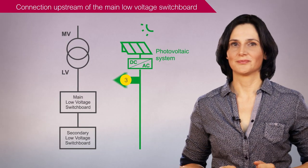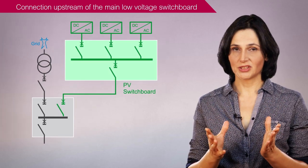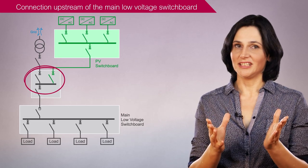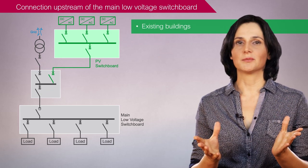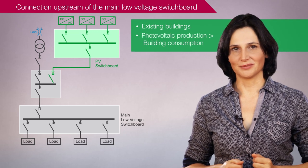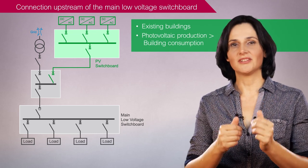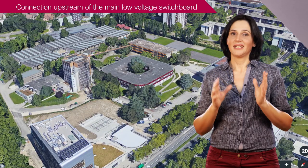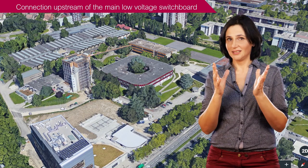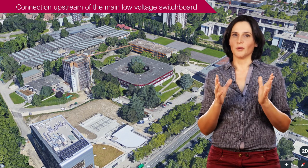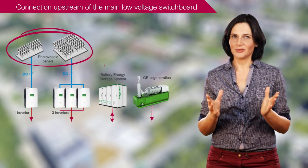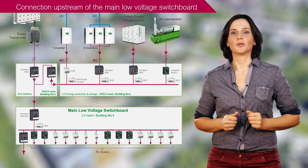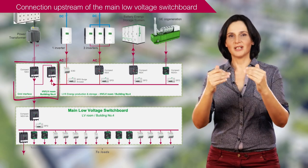Third architecture. In this third architecture, the photovoltaic production is connected upstream of the main low voltage switchboard. This type of installation is suitable for existing buildings when the added photovoltaic production is larger than the building's consumption. A connection upstream of the main low voltage switchboard means the existing installation does not have to be modified. This type of installation can be seen at the EMinov campus in Grenoble, where important photovoltaic production, cogeneration, and storage were added. All sources were brought together and connected upstream of the main low voltage switchboard.